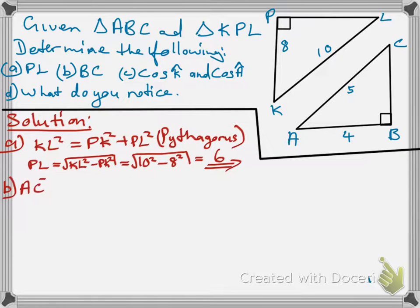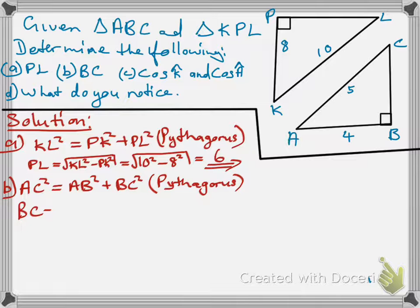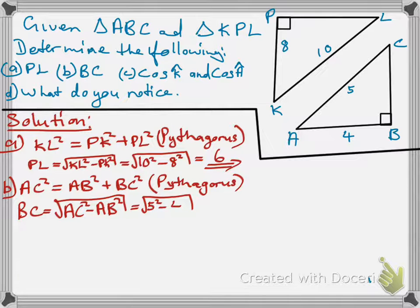And then, we can also use Pythagoras to work out the other remaining side, which is AC. Using Pythagoras, AC squared is equal to AB squared plus BC squared, that is because of Pythagoras. And then, we make BC subject of the formula, BC will be equal to square root of AC squared minus AB squared. And then, we substitute the numerical values, and then we work out the answer.